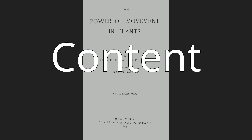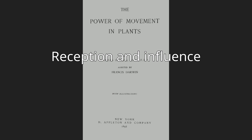Chapter 6: Modified Circummutation — Sleep or Nyctotropic Movements, Their Use, Sleep of Cotyledons. Chapter 7: Modified Circummutation — Nyctotropic or Sleep Movements of Leaves. Chapter 8: Modified Circummutation — Movements Excited by Light. Chapter 9: Sensitiveness of Plants to Light, Its Transmitted Effects. Chapter 10: Modified Circummutation — Movements Excited by Gravitation. Chapter 11: Localized Sensitiveness to Gravitation and Its Transmitted Effects. Chapter 12: Summary and Concluding Remarks.